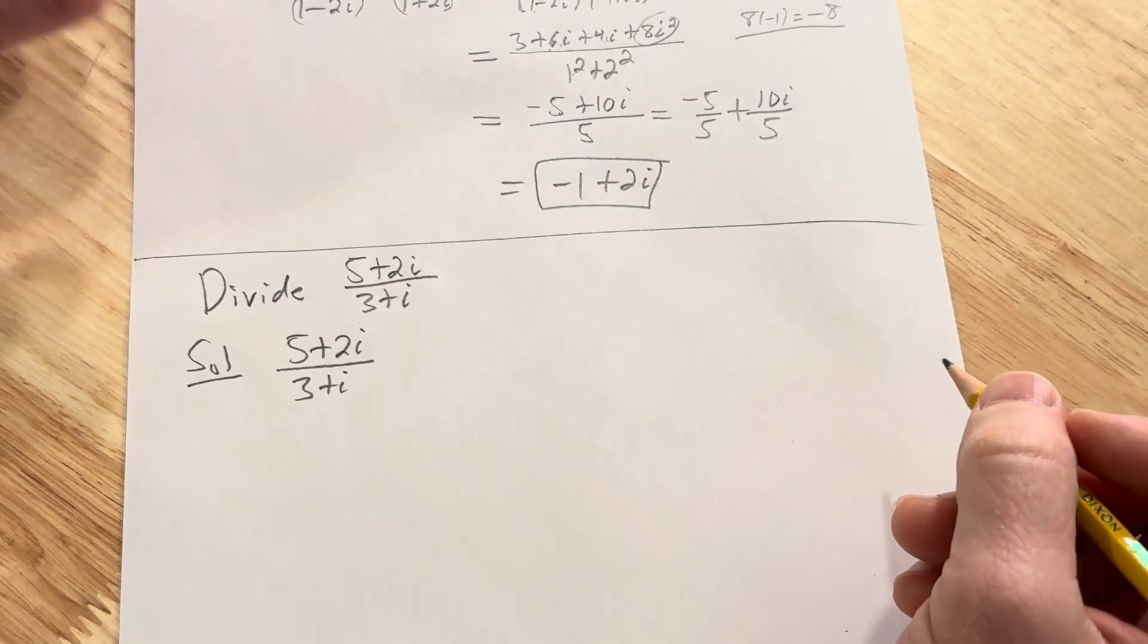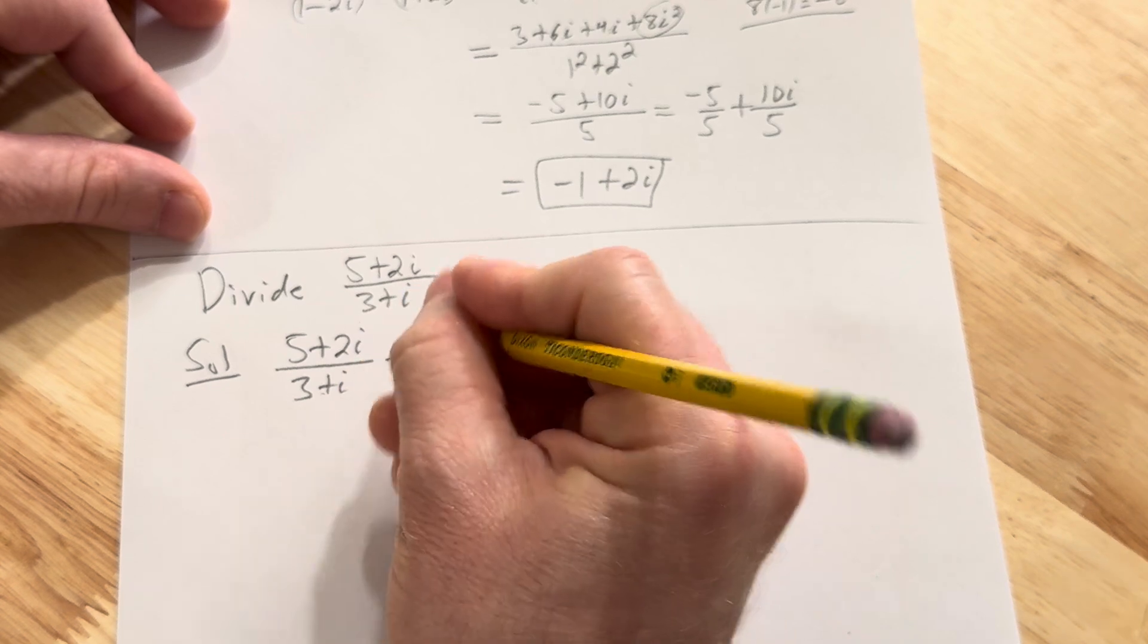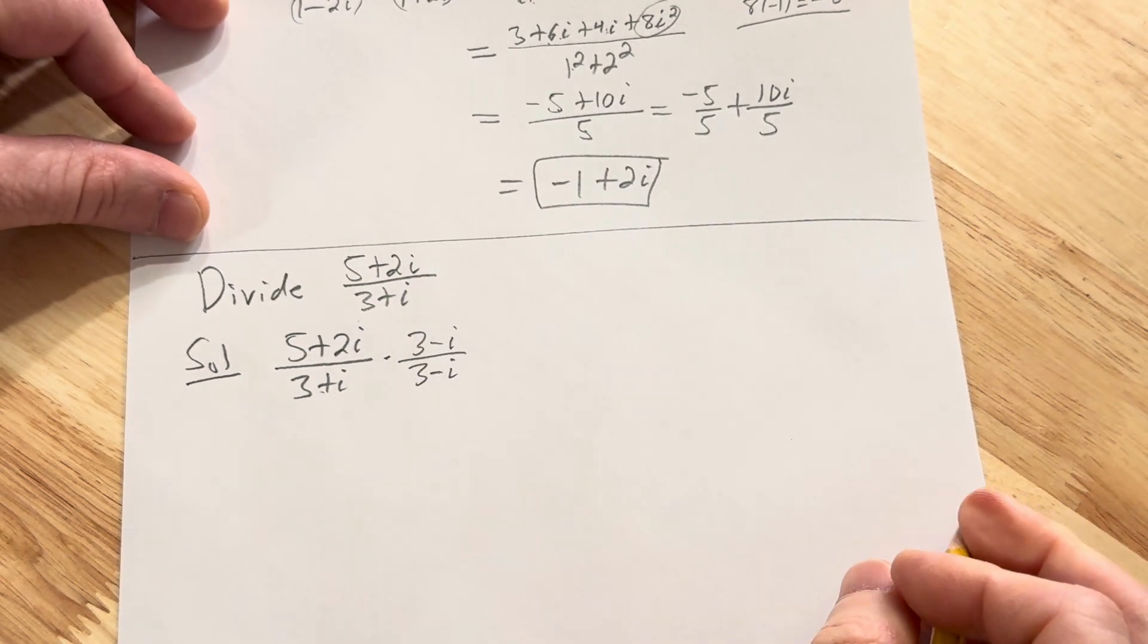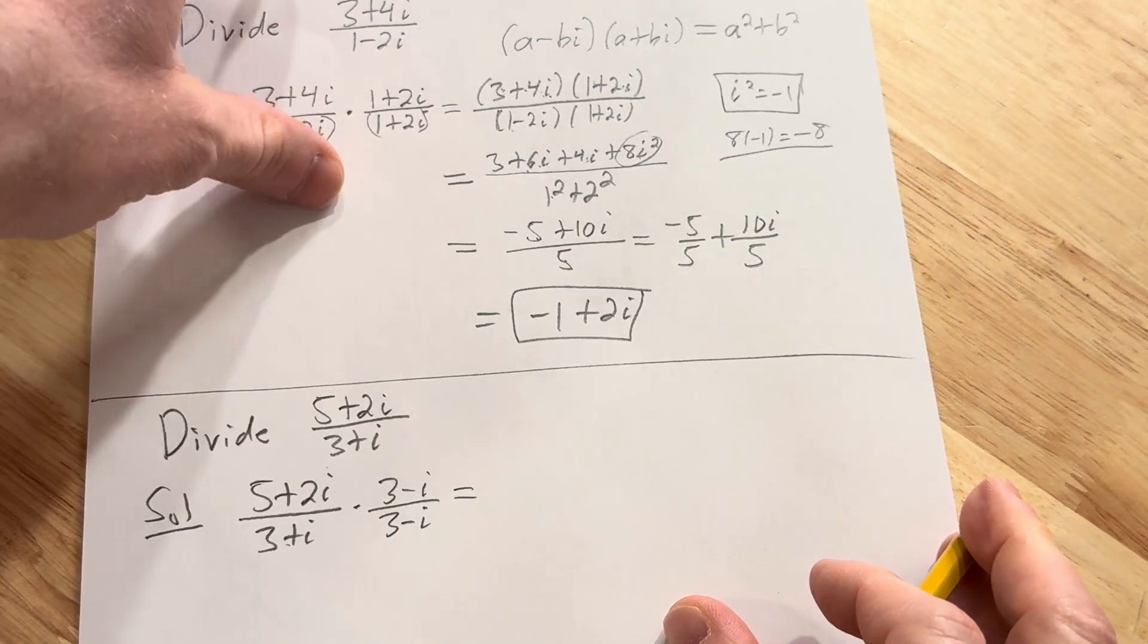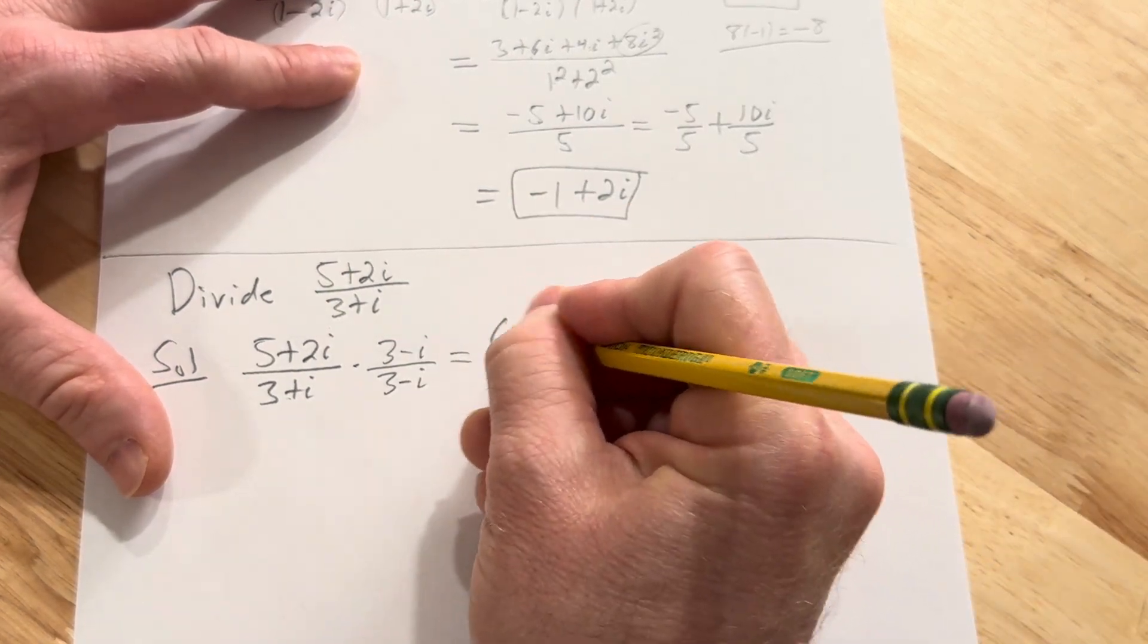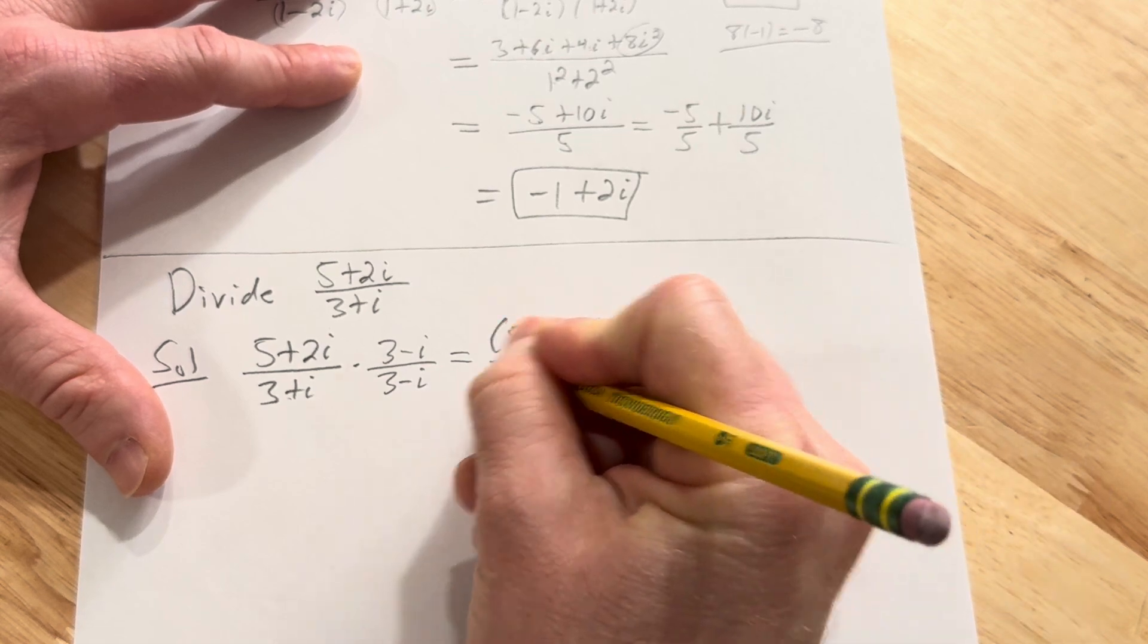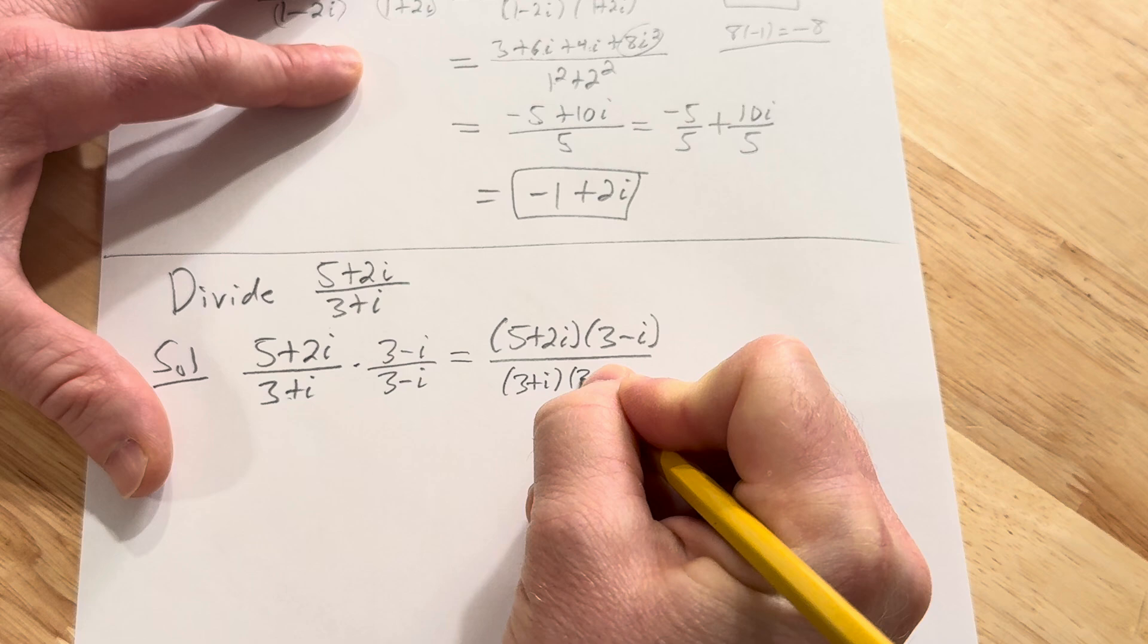This time we're going to write it down again. So solution: 5 plus 2i over 3 plus i. And as before we're going to multiply by the complex conjugate. And so to find that you basically just switch the sign. So 3 minus i over 3 minus i.